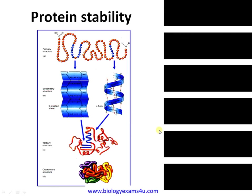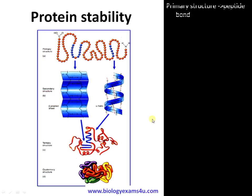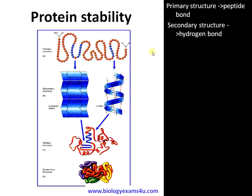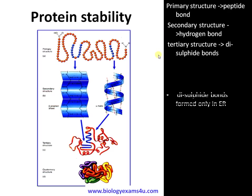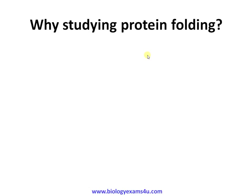A number of factors determine protein stability. The main bond in the primary structure is the peptide bond. In the secondary structure, hydrogen bonds between polypeptide chains are important. In the tertiary structure, disulfide bonds contribute to further folding, giving the native biologically active conformation. Disulfide bonds are formed only in the endoplasmic reticulum, which provides a highly oxidizing environment.